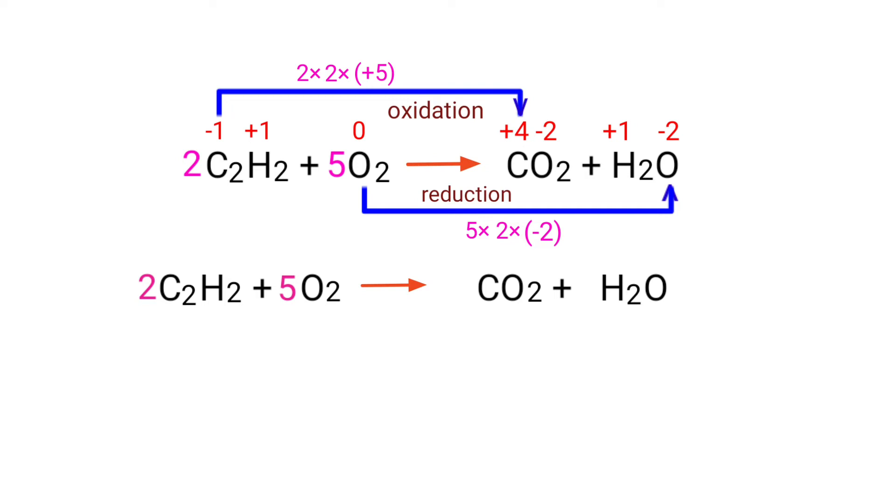Now you can balance the number of atoms in this equation. In the reactants side, there are 4 Carbon atoms, 4 Hydrogen atoms and 10 Oxygen atoms present. And the products side, there are 1 Carbon atom, 2 Hydrogen atoms and 3 Oxygen atoms present.